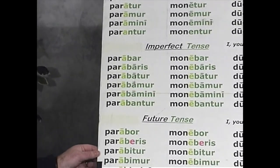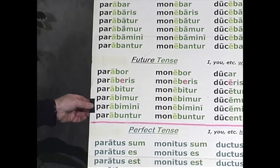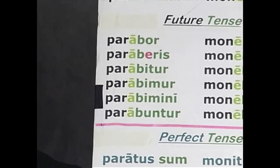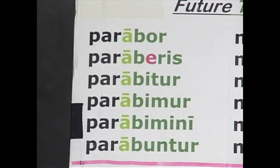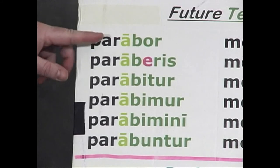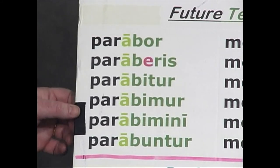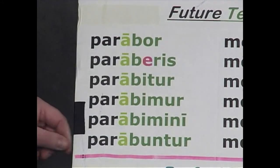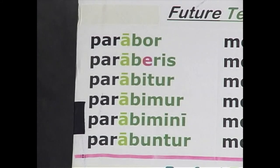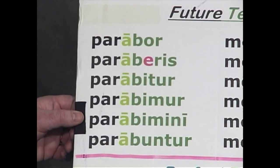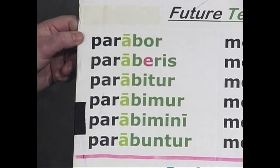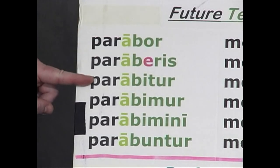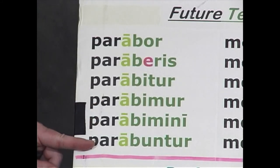Now let's move to the future. For the first and second conjugations, we follow the same pattern as the active indicative system — we add future endings to the stem. The future passive endings are: -bor, -beris, -bitur, -bimur, -bimini, -buntur. You add these endings to the stem: parabor, paraberis, parabitur, parabimur, parabimini, parabuntur. Translation: I will be prepared, you will be prepared, he will be prepared, we, you plural, they will be prepared. The subject is being acted upon.